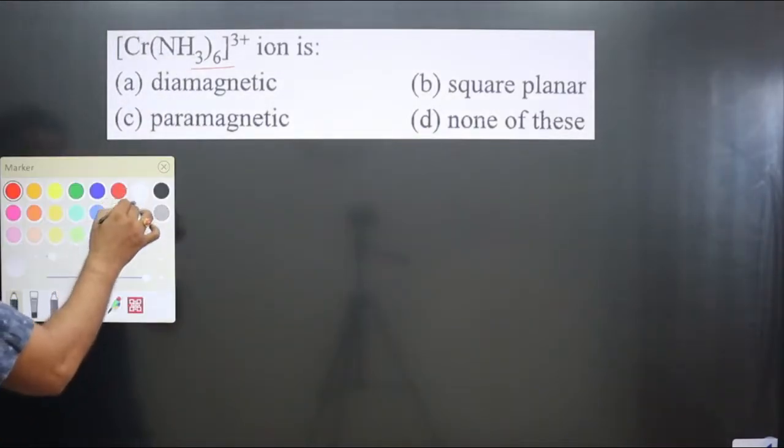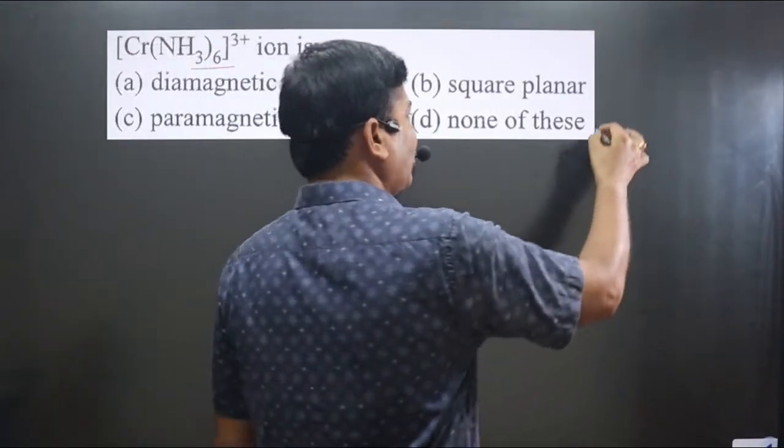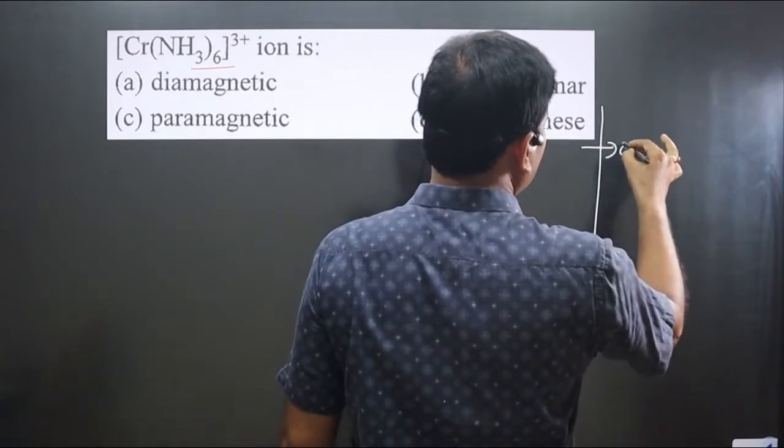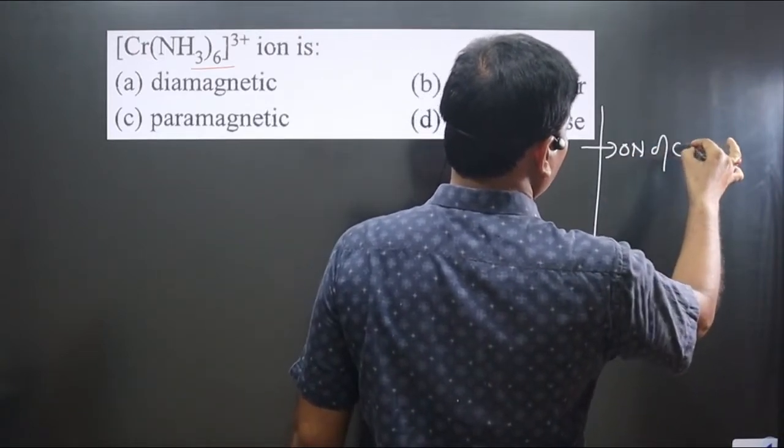To apply valence bond theory, we follow simple steps. First of all, you should write the oxidation number of the central metal atom.